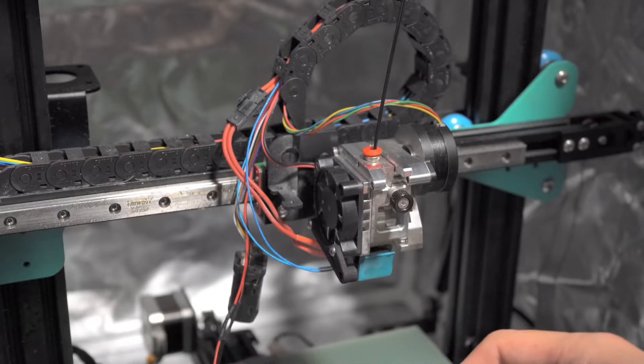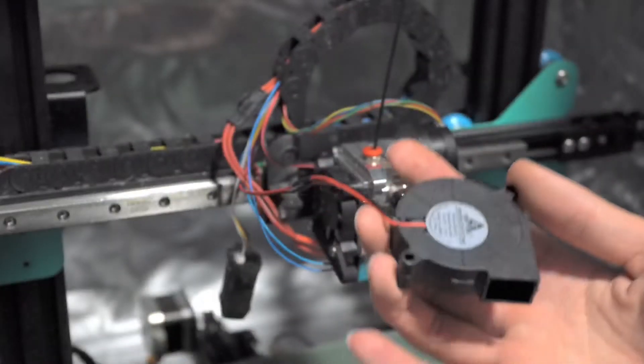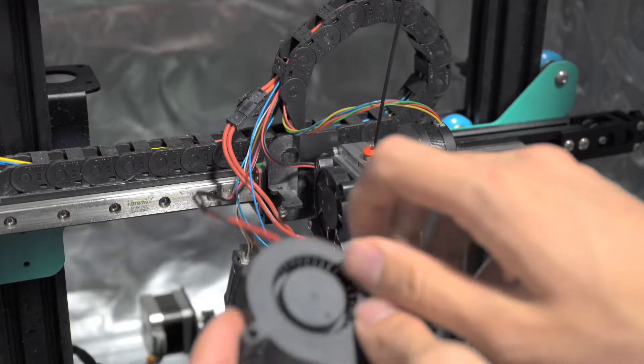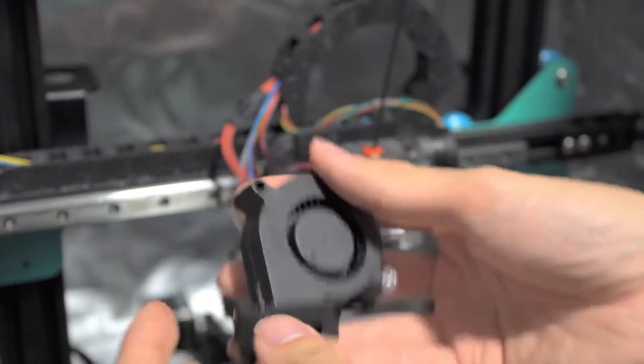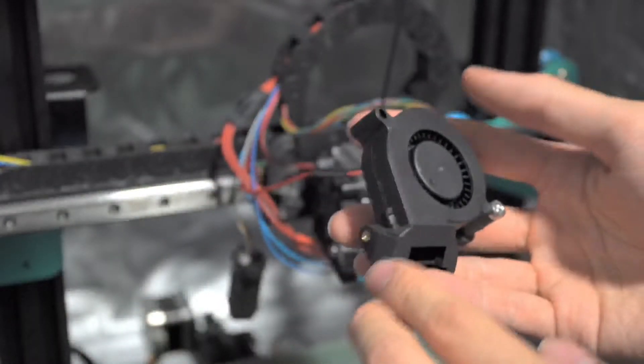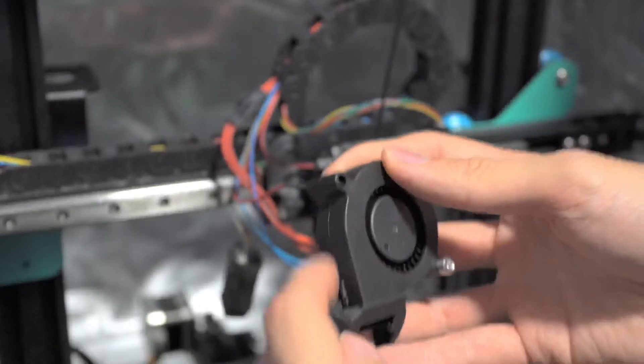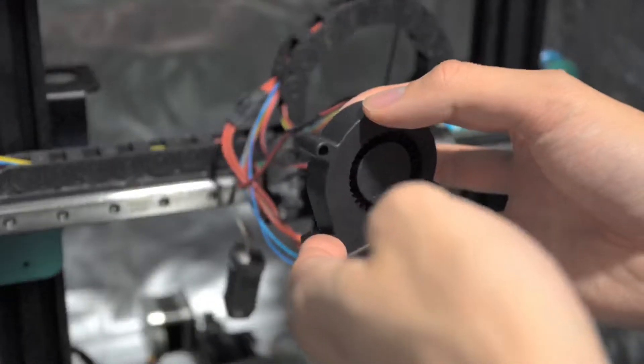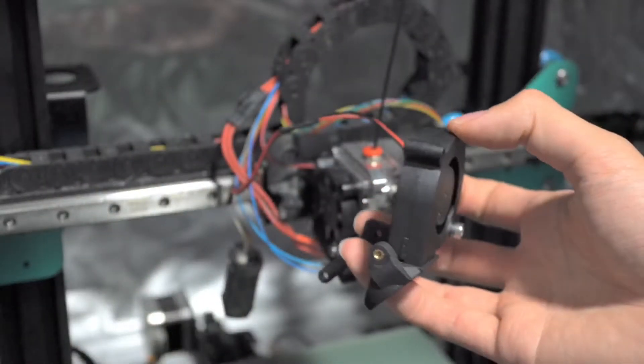And the next thing is, take your 5015 blower fan and use M4 bolts here. If you print with MJF, like I did, it will fit perfectly. And it kind of also rolls. So, maybe you can put some like hot glue, oh no, hot glue is not recommended. But yeah, you can put something in here, like silicone or something to seal it completely, if you want.